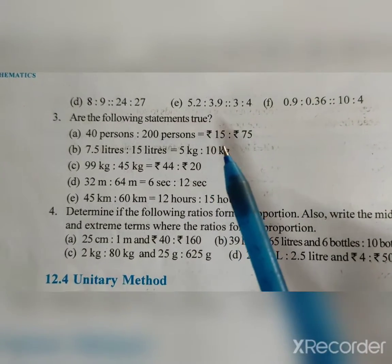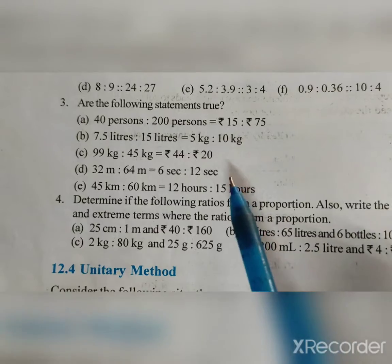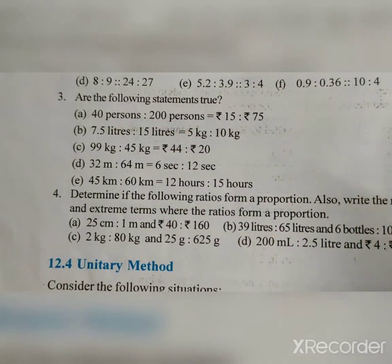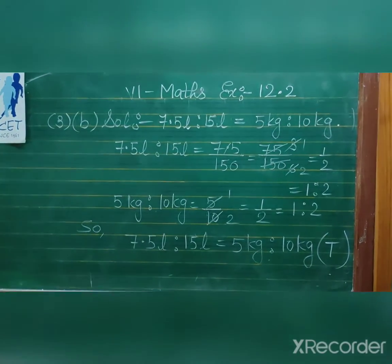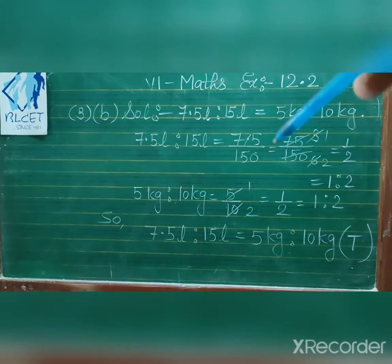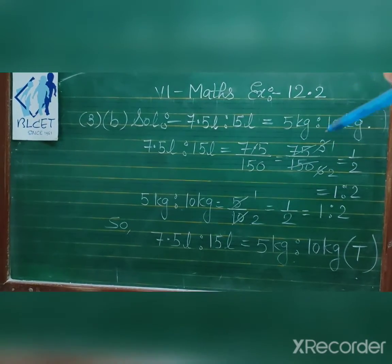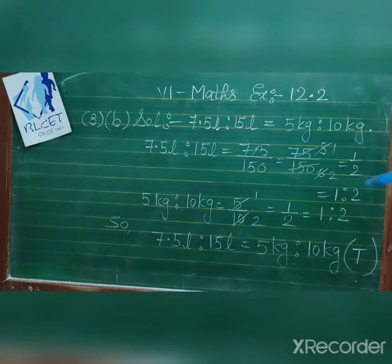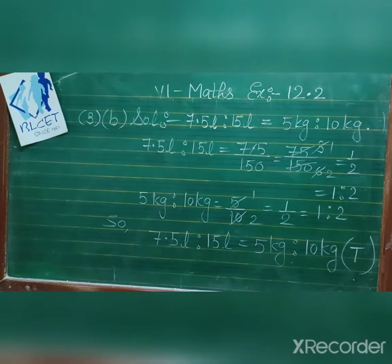Question 3: Are the following statements true? For part B: 7.5 litre is to 15 litre. 7.5 upon 15 - one decimal digit so we get 75 upon 150, which simplifies to 1 is to 2. And 5 kg is to 10 kg: 5 upon 10 simplifies to 1 is to 2. Both ratios are equal, so this statement is true. Solve in the CW notebook in this way.